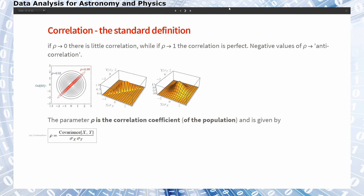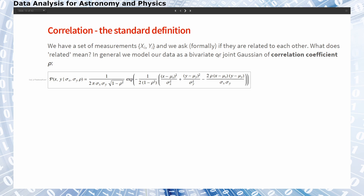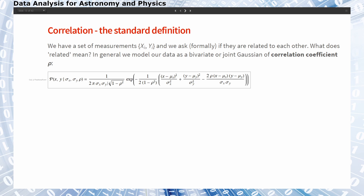If rho is 0, this means very little correlation. Looking back at the formula, when rho is 0, this mixing term disappears, leaving us with the standard bivariate Gaussian of uncorrelated x and y.